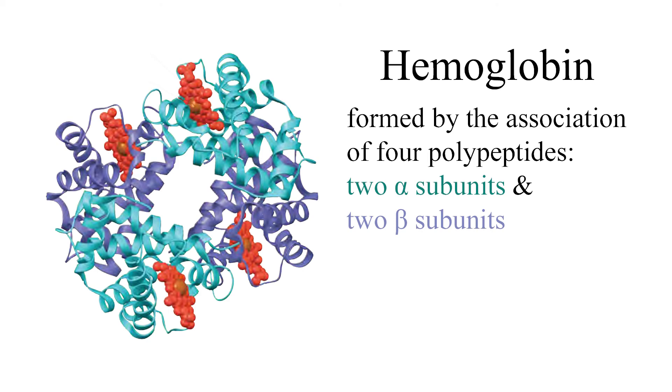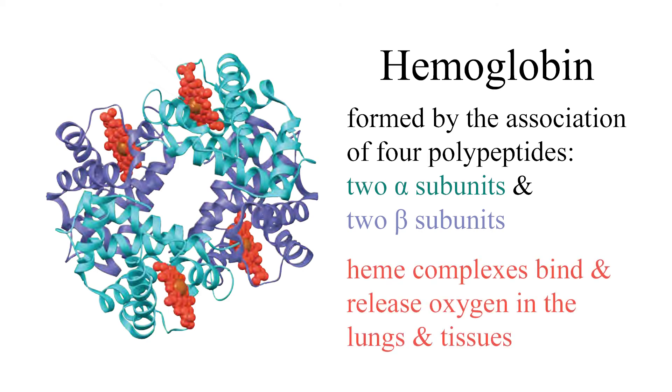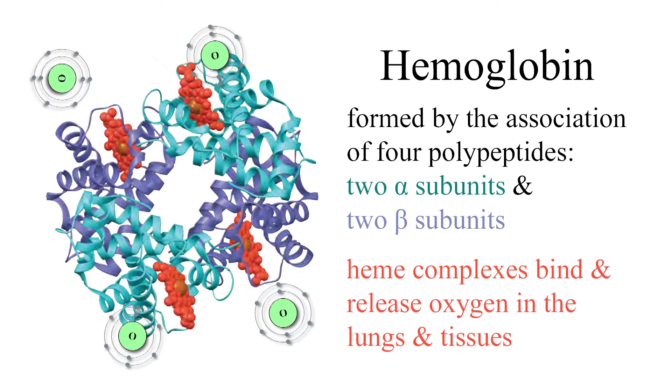Four helical polypeptide subunits in hemoglobin associate with four heme complexes. These heme complexes contain an iron atom, which binds and releases oxygen whenever this particular red blood cell is in the lungs or in the tissues.